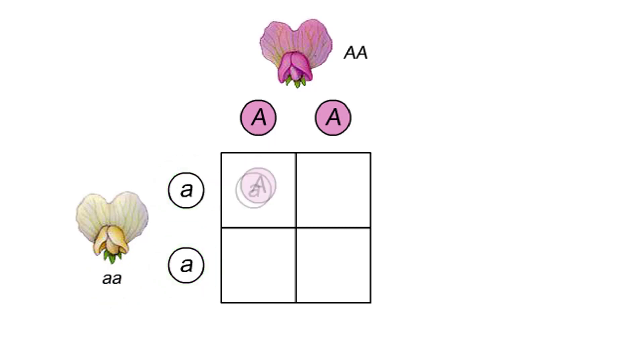We can use this Punnett square to predict the probable gamete combinations and genotypes of the offspring. This shows the predicted first generation, or F1, genotypes.